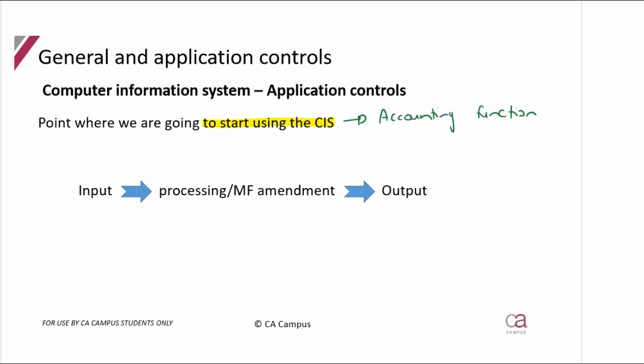You can't put through data before you have those general controls in place, because if you haven't programmed the system correctly, when you go and put in the data for a revenue transaction, it's not going to go where it's supposed to go. So you set it up first, and once you know it's working — because you've tested it — you can start to actually use it. That is the point we are at now: inputting information, data, and source documents, allowing the system to process what's been input so it ends up in the financials as the output.